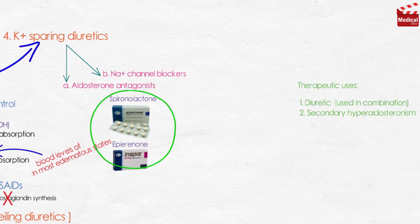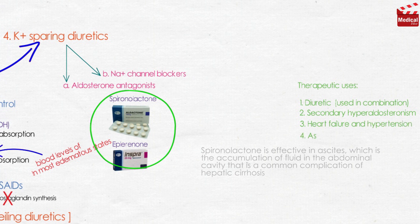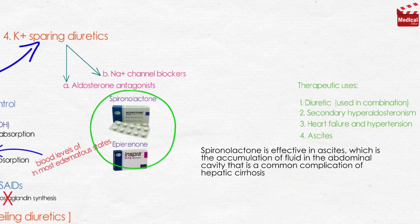Aldosterone antagonists are used in heart failure and hypertension. Spironolactone is effective in ascites, which is the accumulation of fluid in the abdominal cavity, that is a common complication of hepatic cirrhosis.